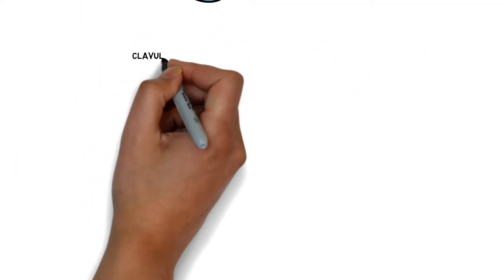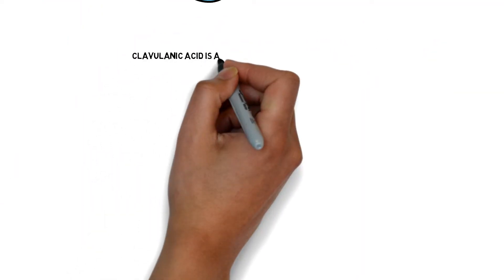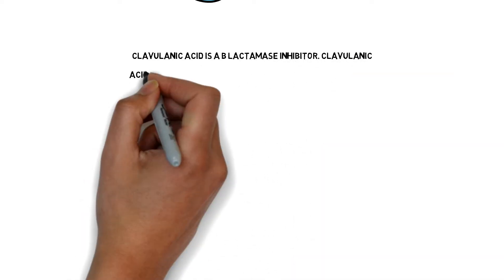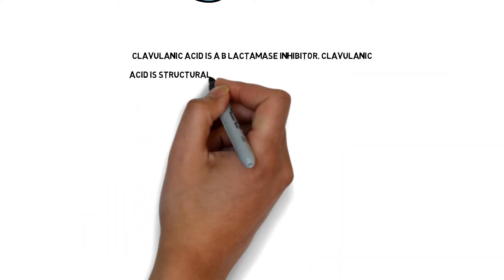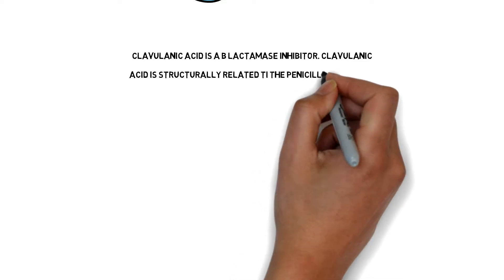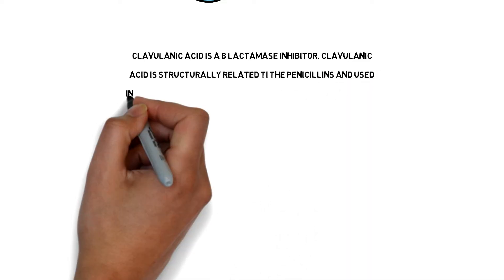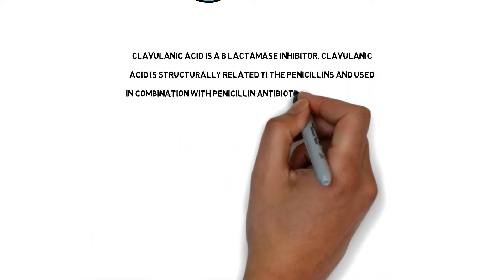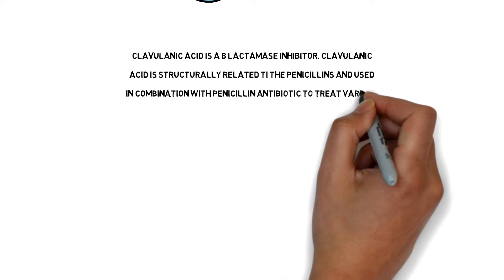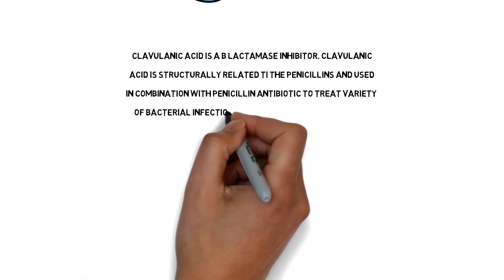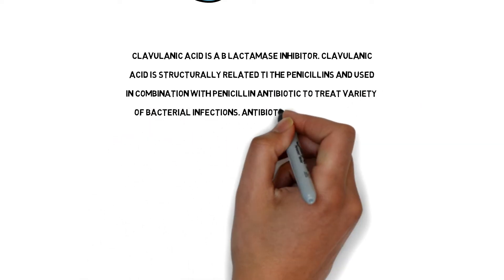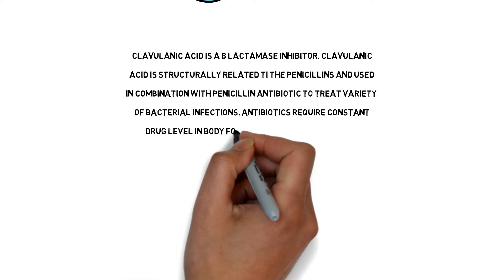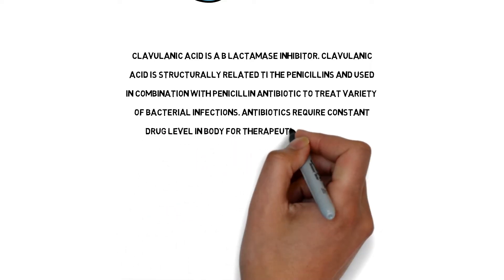Clavulanic acid is a beta-lactamase inhibitor. Clavulanic acid is structurally related to the penicillins and used in combination with penicillin antibiotics to treat varied bacterial infections. Antibiotics require consistent drug levels in the body for therapeutic effect.